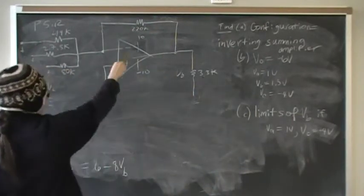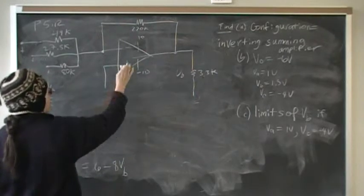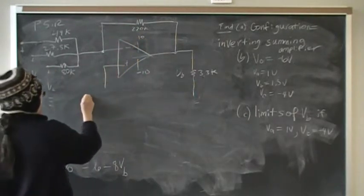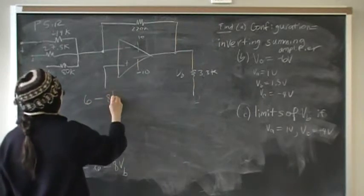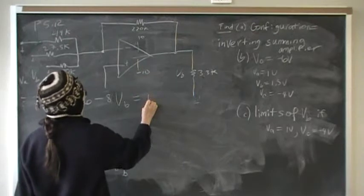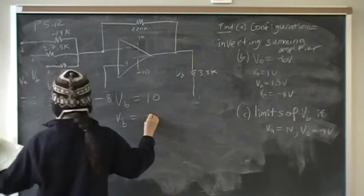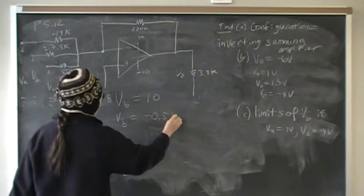It will saturate at 10 volts as a maximum. So for this end of the Vout limitation, we have 6 - 8Vb = 10. Therefore, Vb = -0.5 volts at that endpoint.